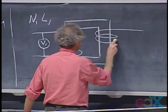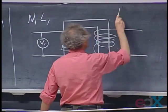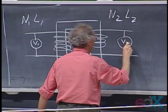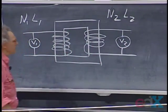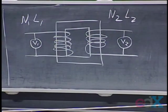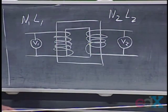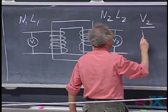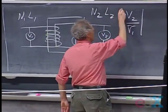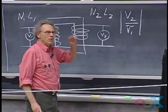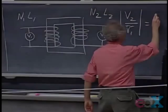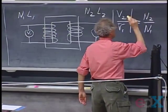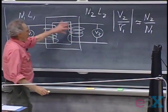And this is the secondary side, with N2 windings and self-inductance L2. I put here a voltmeter which always monitors that voltage — I call that V2. You can show with Faraday's law, as I did in lectures, that V2 divided by V1 — not worrying about plus or minus signs — is N2 divided by N1. That's a good approximation, depending on how well the coupling goes.